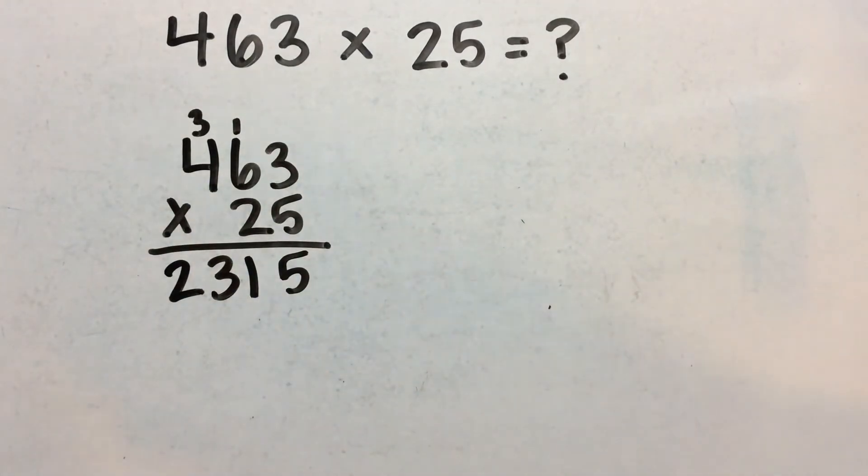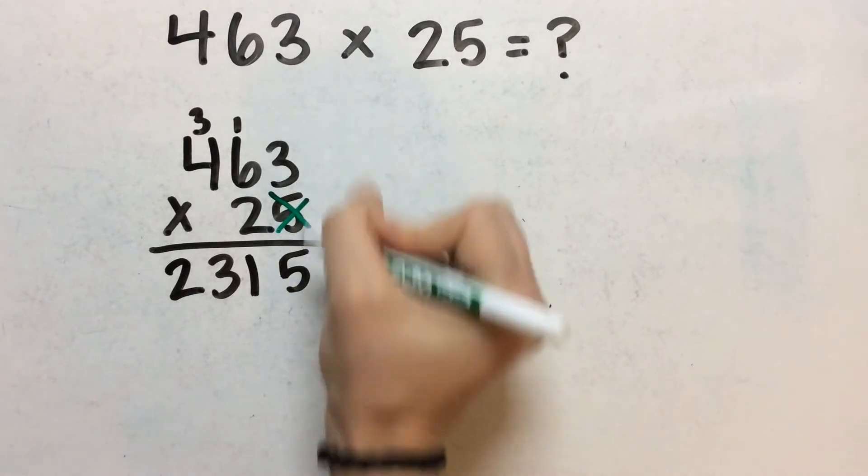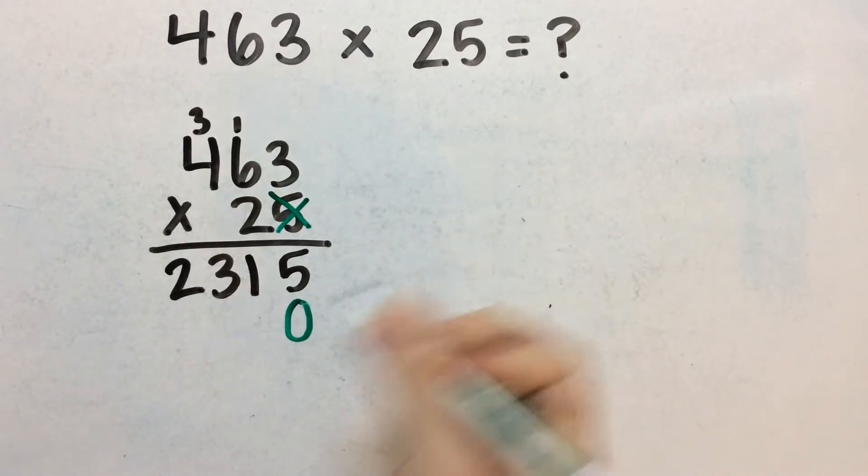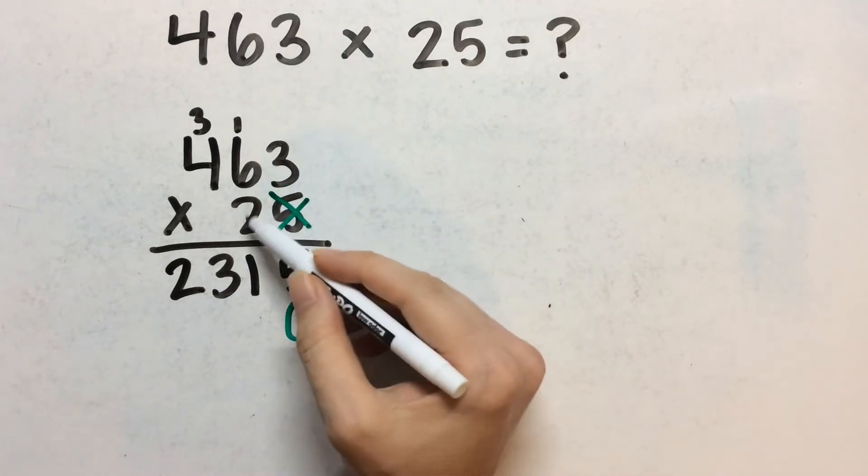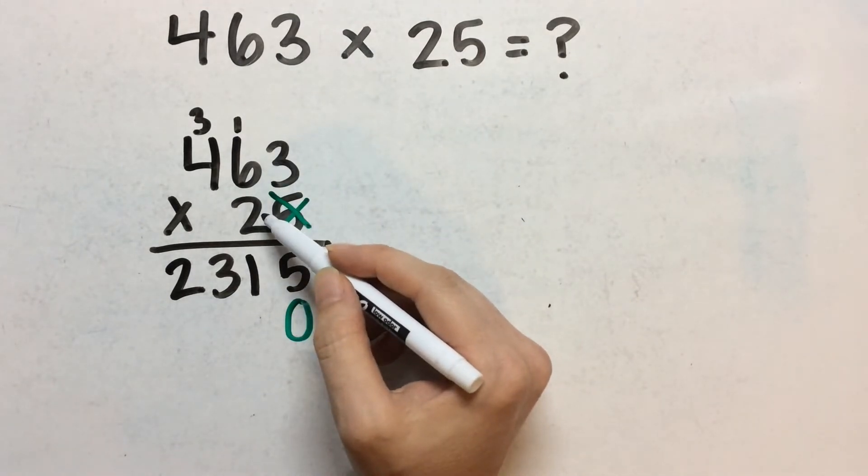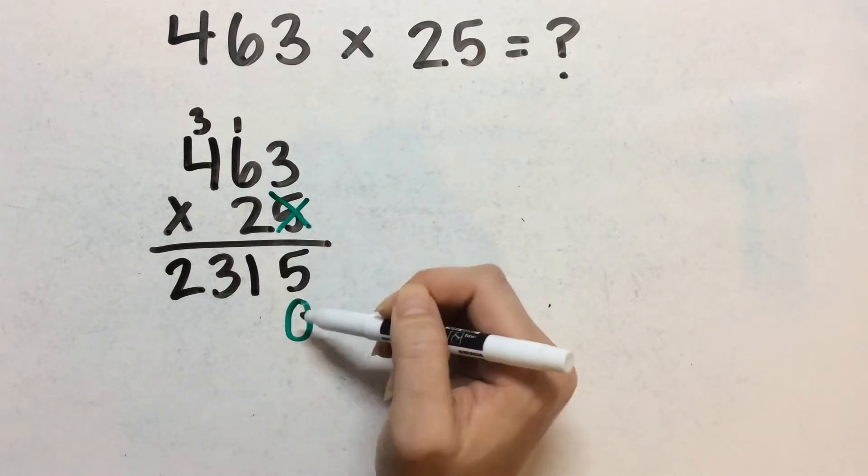Five times four is 20 plus three more is 23. And then I do a trick that I like to call X and O. So I cross off my ones and I write a zero. I do this because this 25, this is 20 as a place value, not just two.